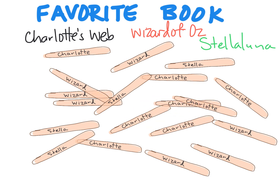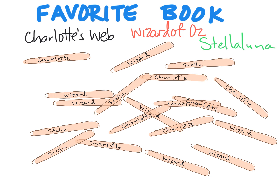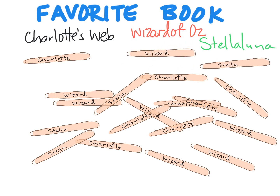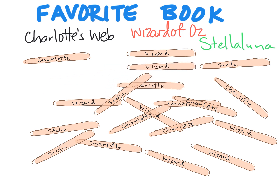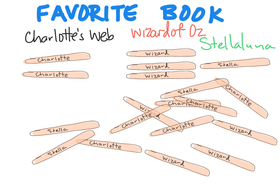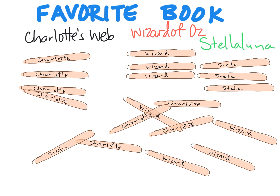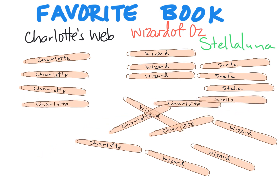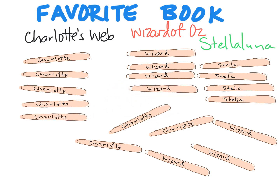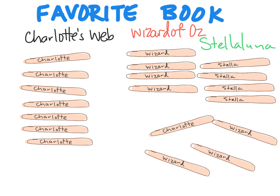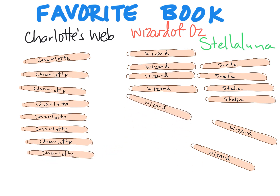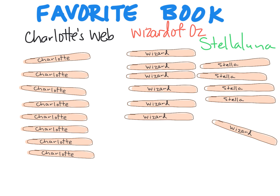So let's start sorting. We can start sorting our Charlotte sticks, our Wizard sticks, and our Stella sticks. Here's another Wizard, here's a Charlotte, here's a Wizard, Stella goes over here, here's Charlotte, and Stella. It's hard to see right away who won. This is meant to show students that this is a really cumbersome, gross way of organizing our data. We could call these kind of tallies, but there's a better way.